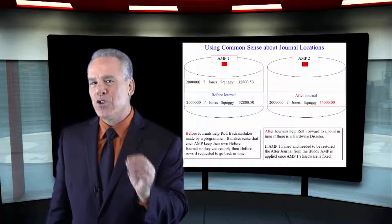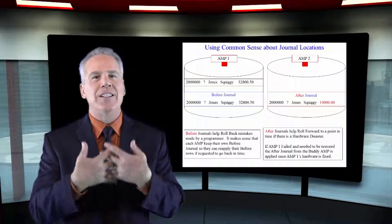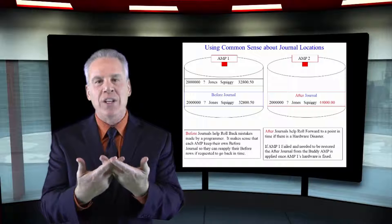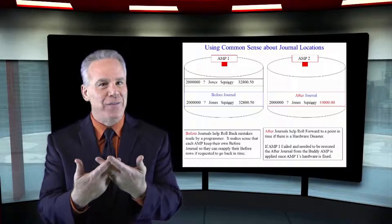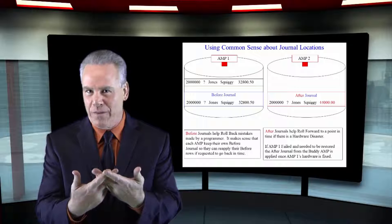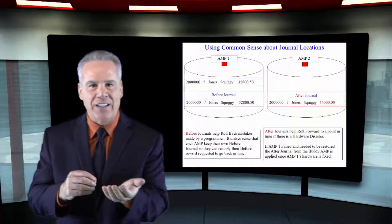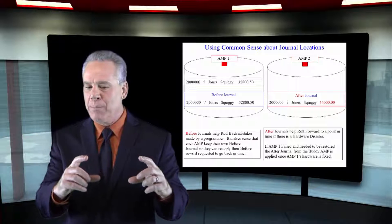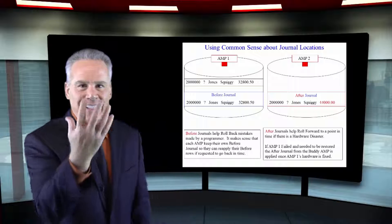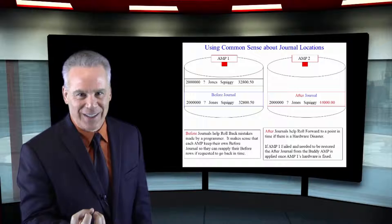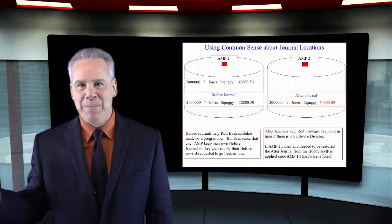The after journal is different. We have an after journal in case there's a disaster where we're using this as part of our backup and restore plan, and that involves a hardware failure. So whenever they take an after journal, they take a picture after the change and store it on the buddy amp, in case something happens to the original amp. We know that data is still stored out there on the buddy.